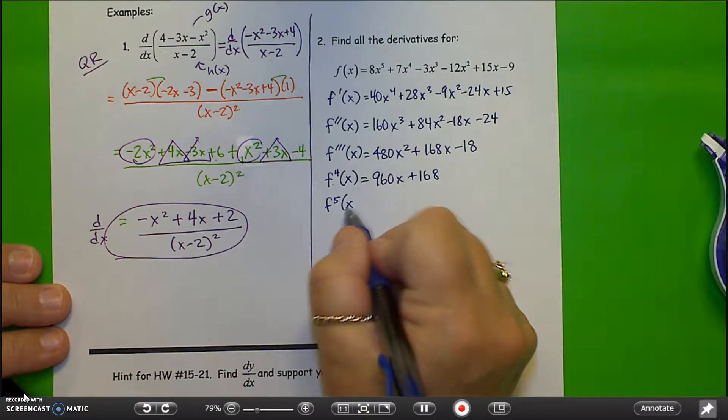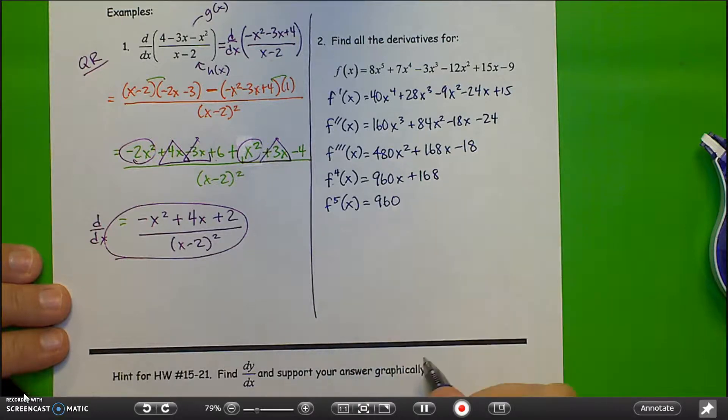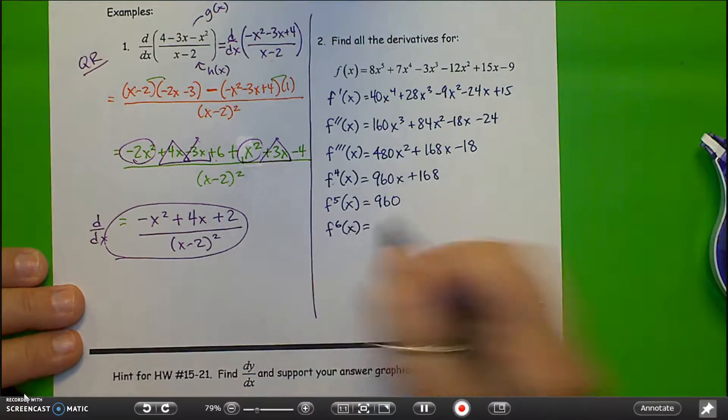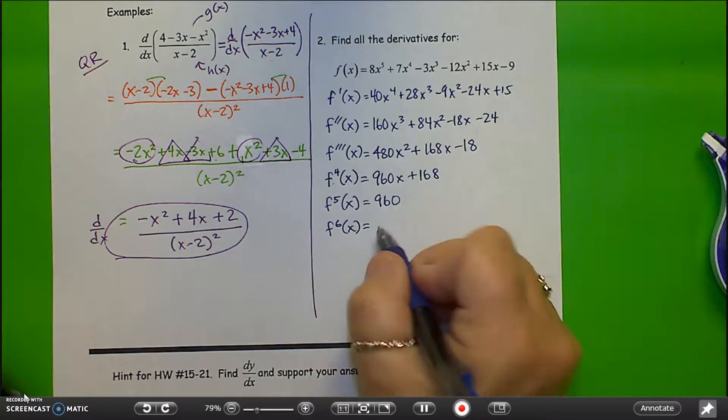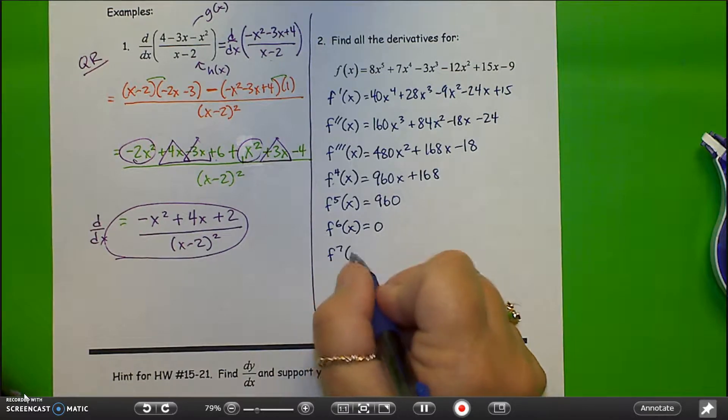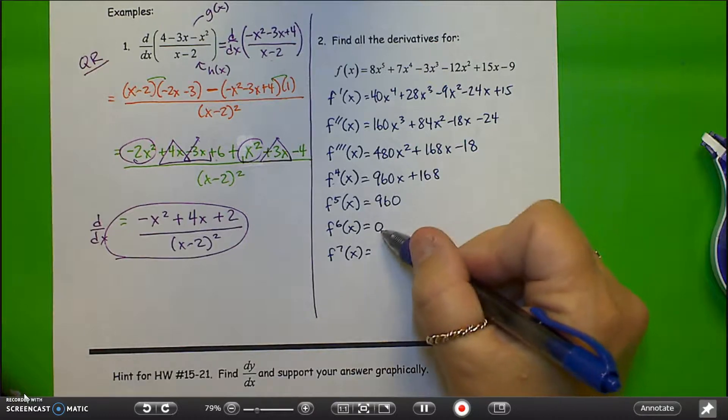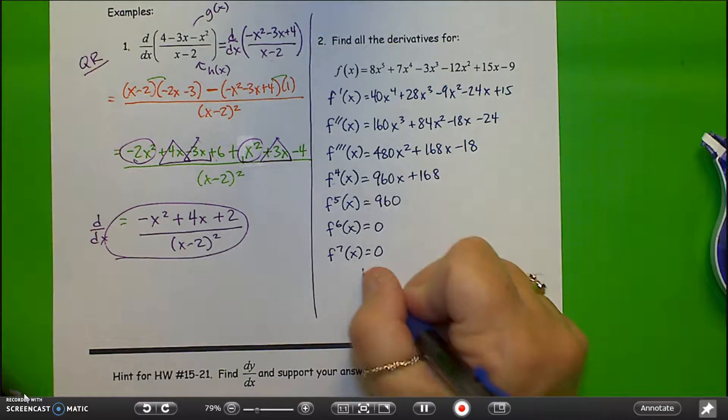Fifth derivative. 960. Plus 0, rather. Sixth derivative. The derivative of a constant is just 0. I could actually do the seventh derivative. Seems like we're done. Actually, we kind of are done. The derivative of 0 is again just 0, and that pattern will continue.